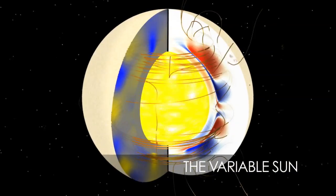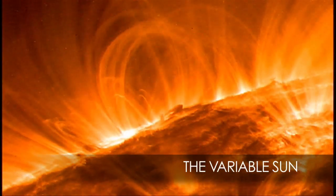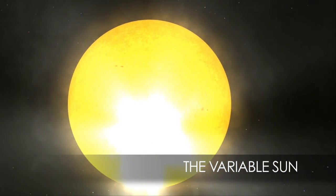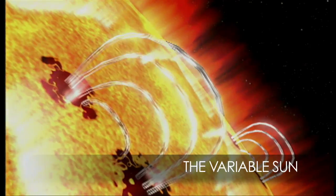But what causes the Sun to vary so much? A closer look at its structure may reveal the answer. Studying the magnetic field and surface activity such as sunspots, solar flares, and coronal mass ejections may provide vital clues.